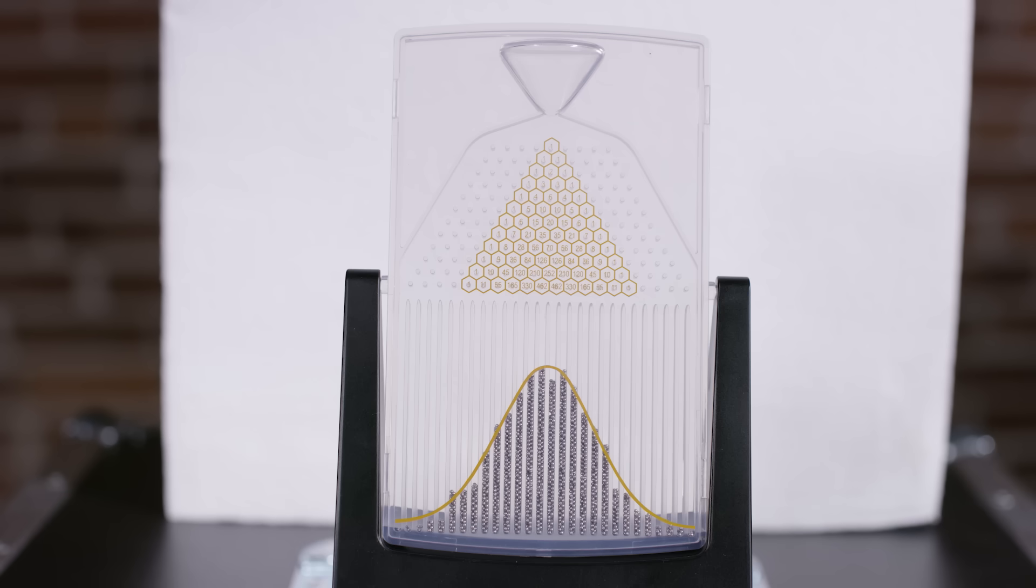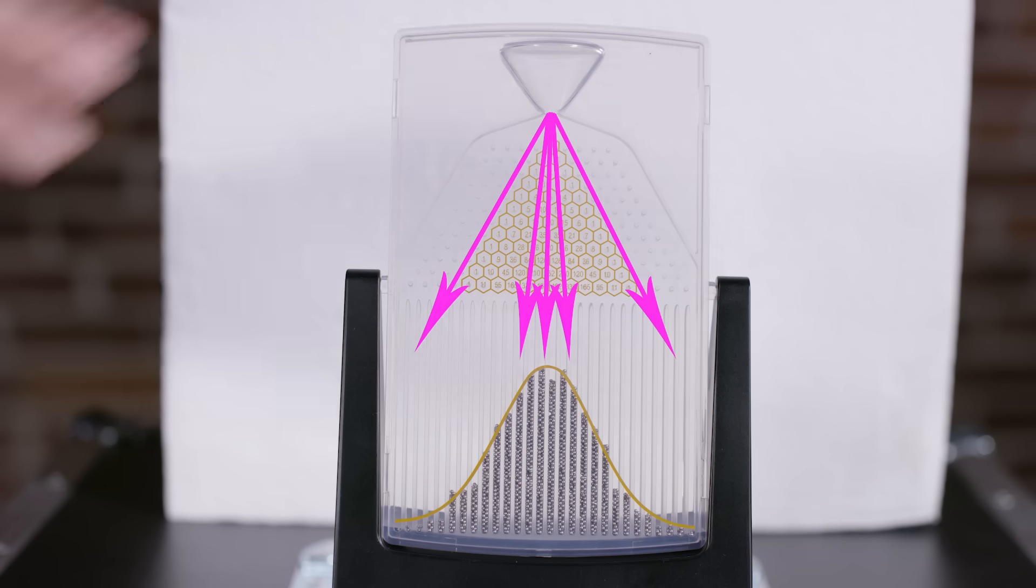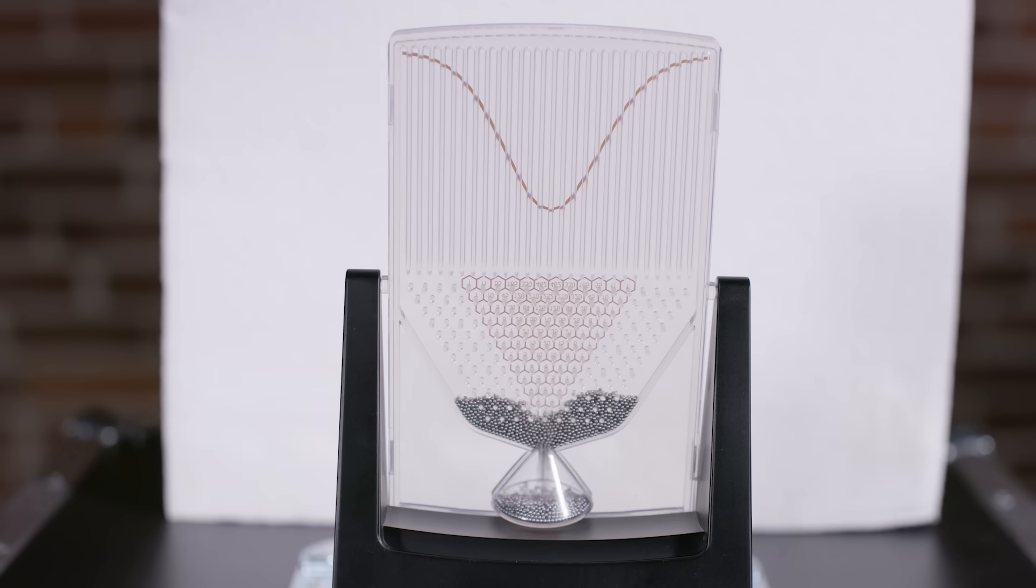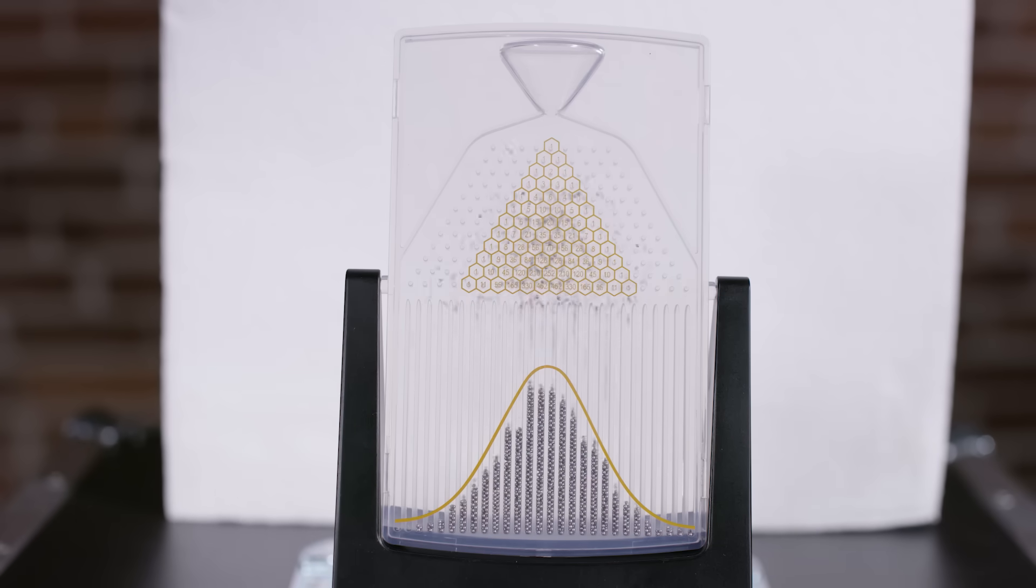Which means we expect more balls to wind up pretty much right below where they started and many fewer on the edges, which corresponds to having way more of one kind of bounce than the other. We don't know where any individual ball will wind up, but we can say something about how they will all behave.